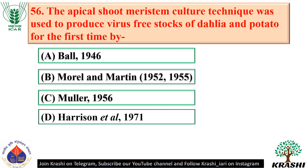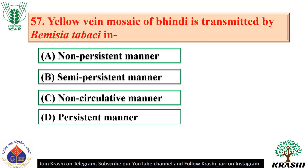Question number 56: The apical shoot meristem culture technique was used to produce virus-free stalks of dahlia and potato for the first time by Morel and Martin in 1952 and 1955 — option B. Question number 57: Yellow vein mosaic of Bhindi is transmitted by Bemisia tabaci in a persistent manner — option D.